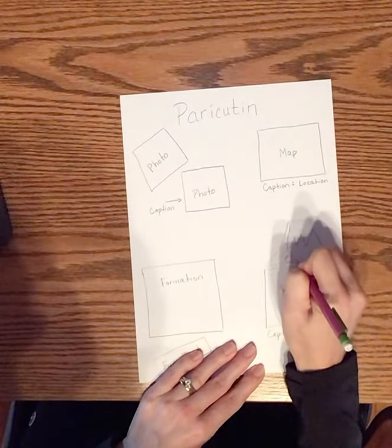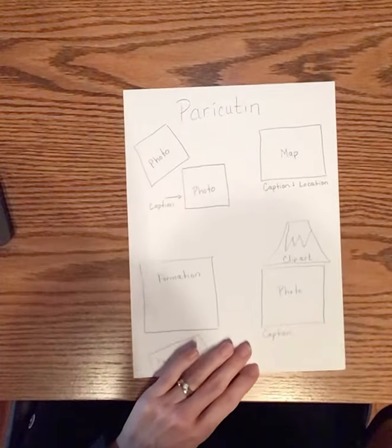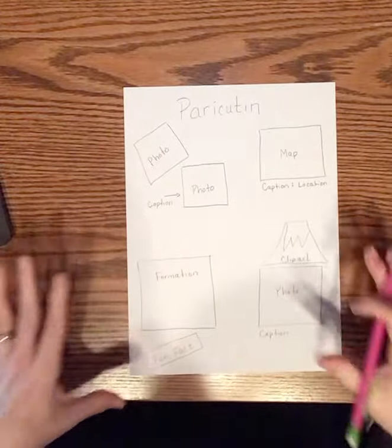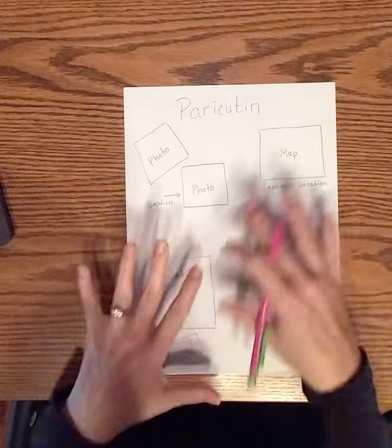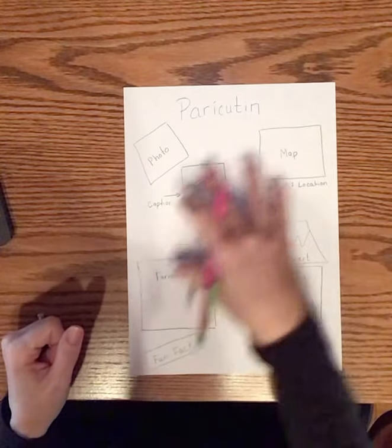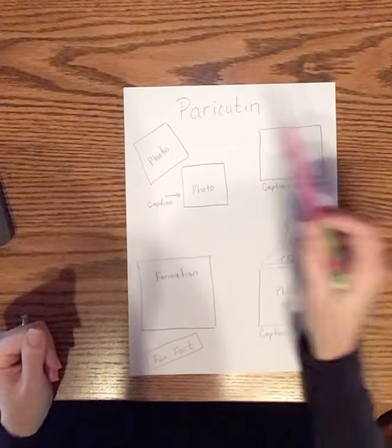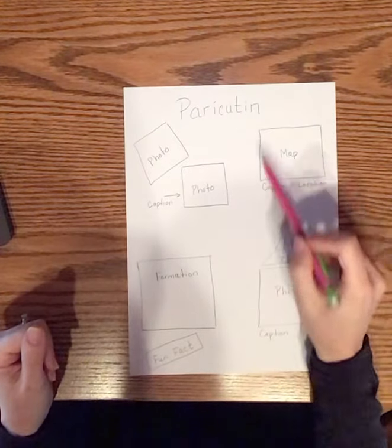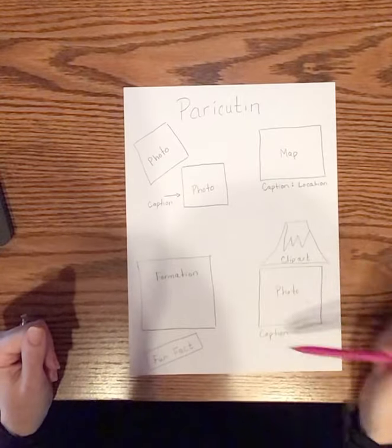I think that's a pretty good start. And then once I put this into the pages app and I figure out how it all fits, if I find that I have some empty space, I might add in some other little clip art pictures. But I think overall I have what's needed. I have my name of my volcano, its location, my fun fact, how it was formed, and then I have pictures and captions.